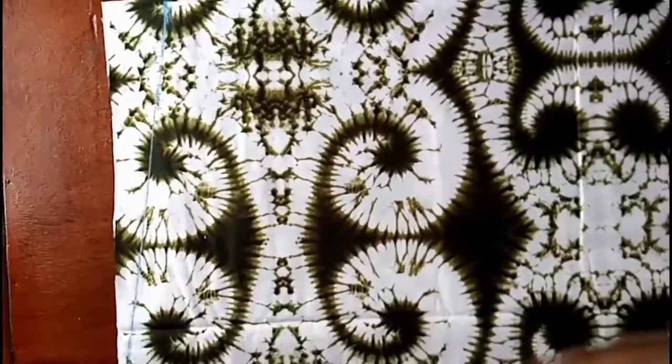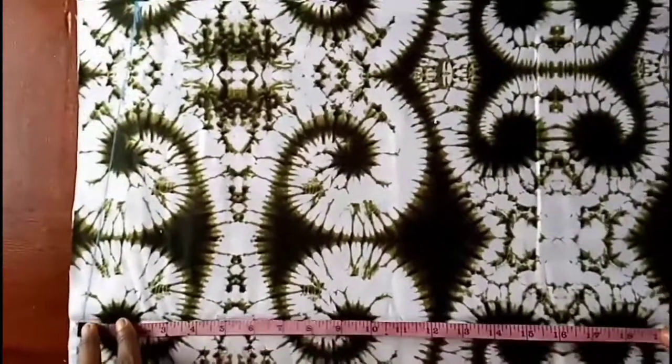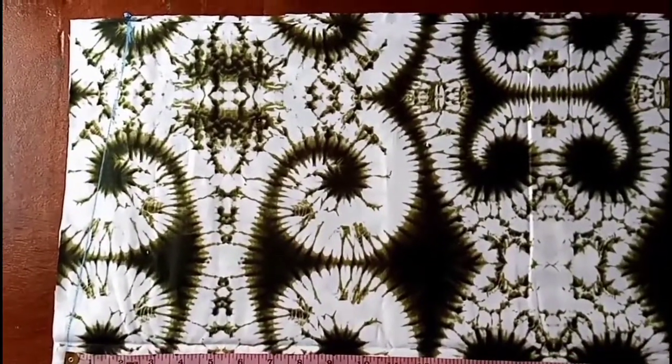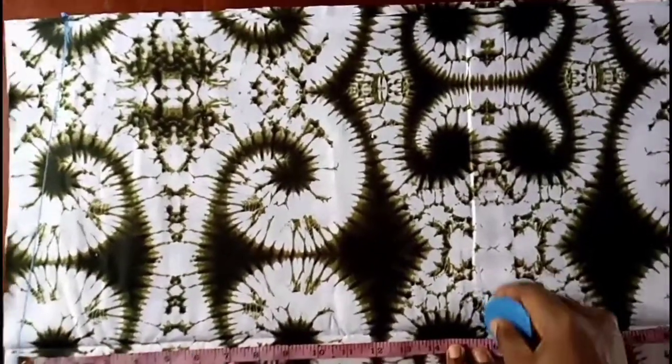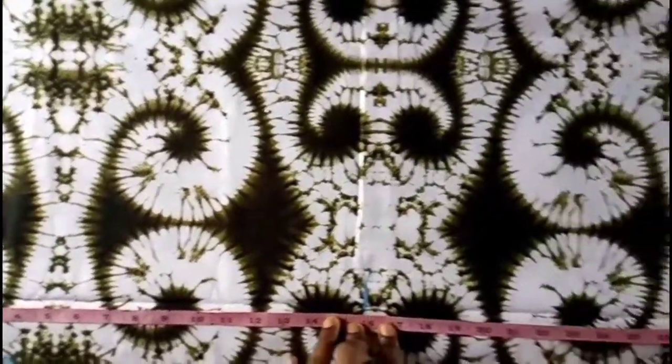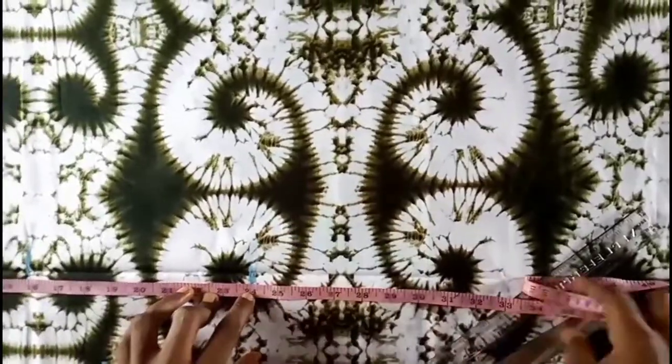So now I'll be marking my vertical measurements from my shoulder. I'll be marking my waistline and my waistline is 16, then my hip line is 24, then the full length.